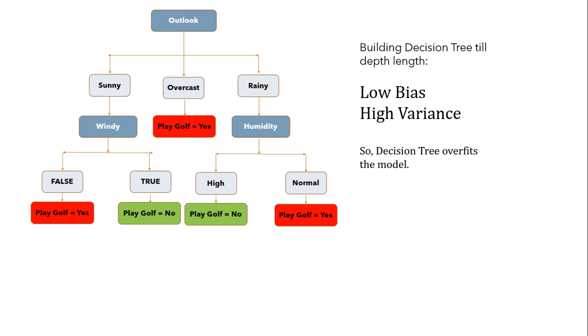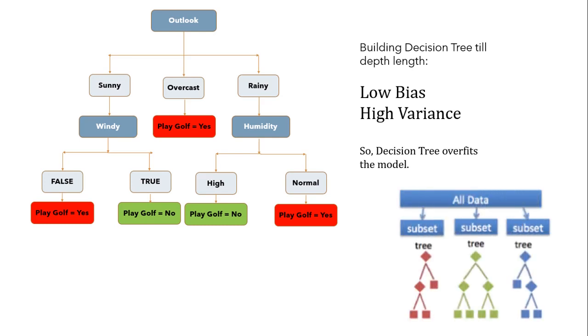So guys, we can overcome this problem of overfitting in random forest as here we are using multiple decision trees. And let's say if these decision trees have high variance, then also we take majority of all these as our model output and this will reduce the variance from high to low as we are not dependent on any particular decision tree over here.